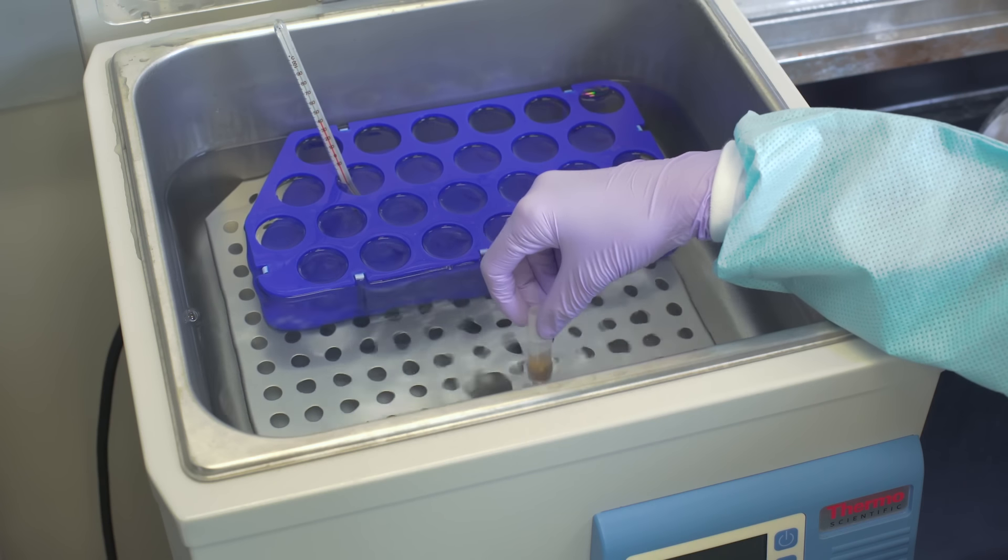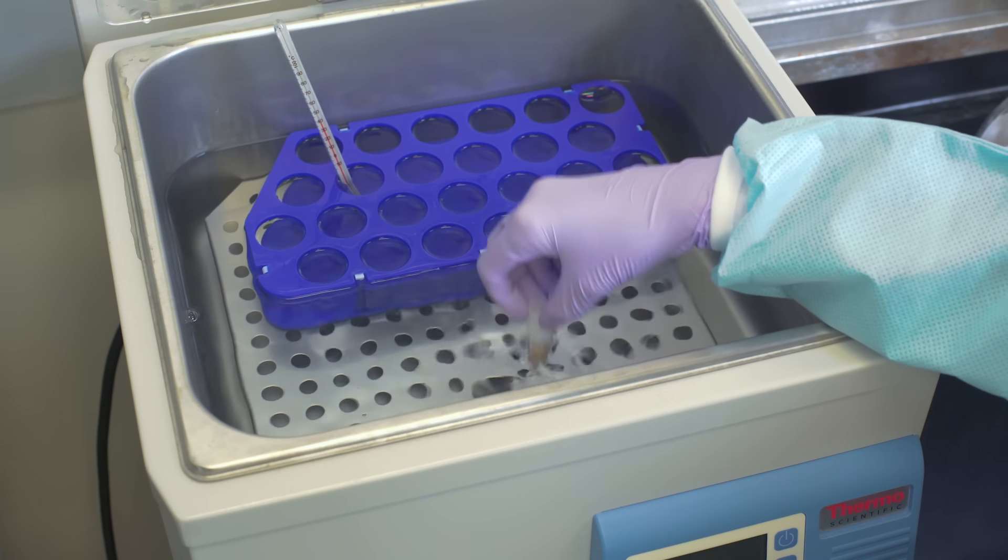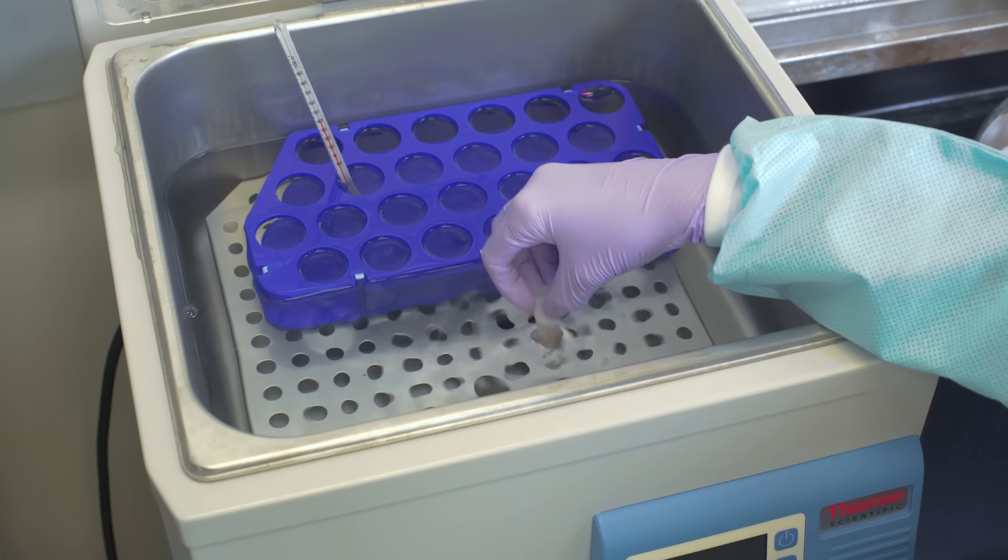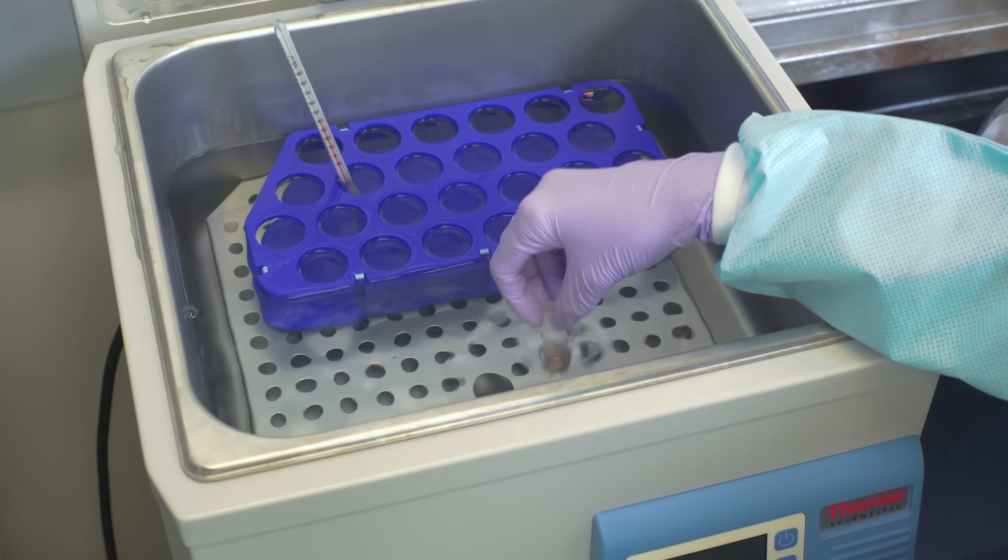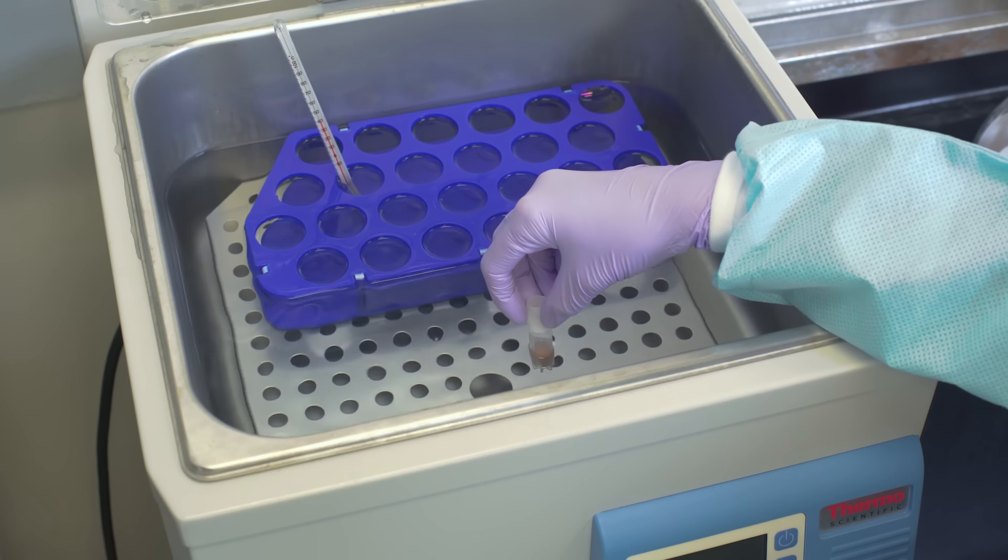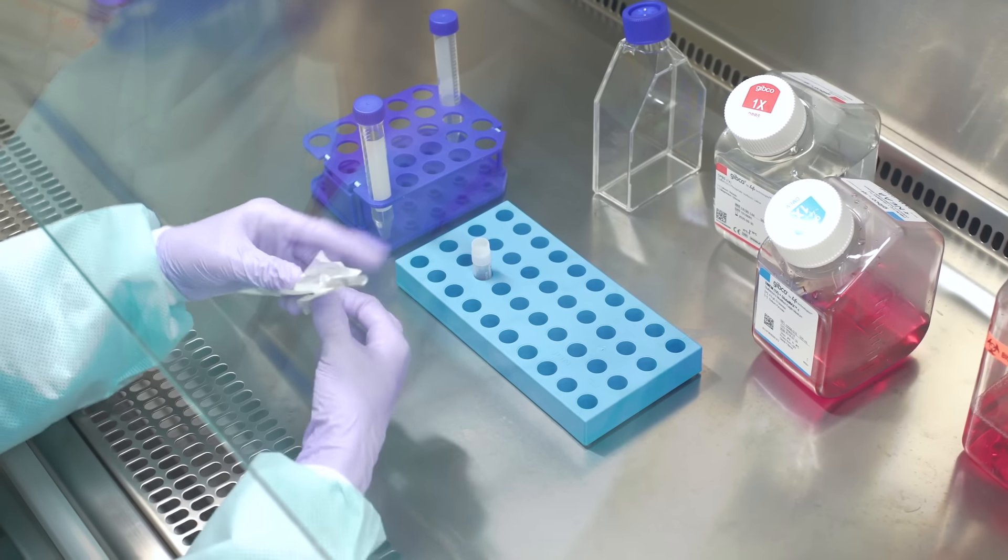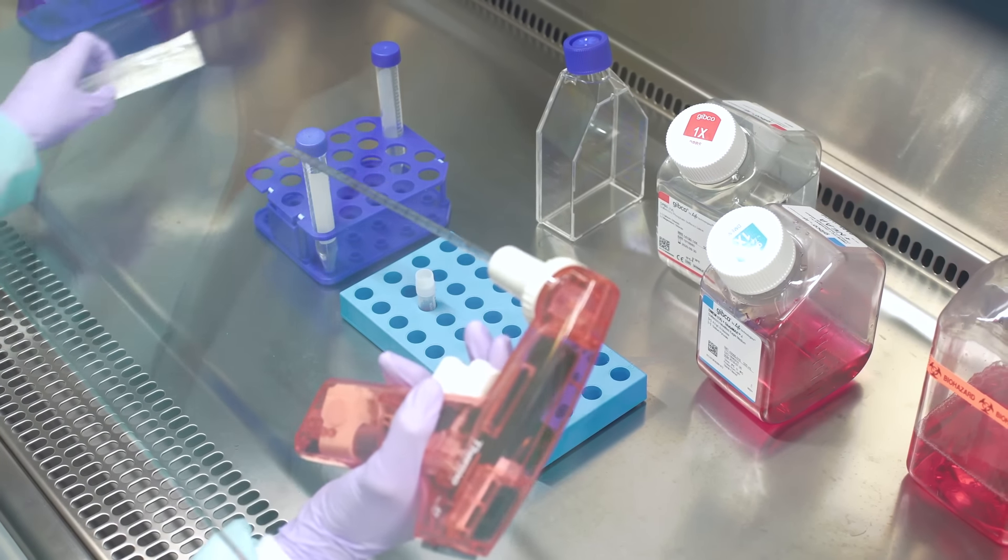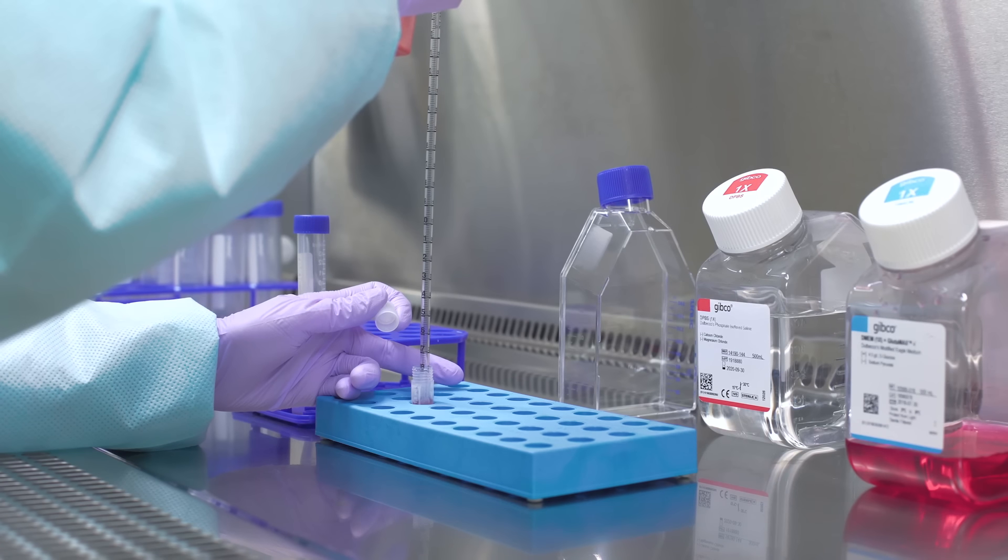The vial of cells should be thawed in a 37 degrees Celsius water bath quickly. Be careful not to submerge the vial as this increases the risk for contamination. Remove the vial from the water bath when a small chunk of ice remains inside. The ice chunk will melt as you move it to the cell culture hood. Wipe the vial with ethanol before placing it in the hood.